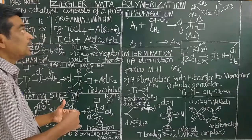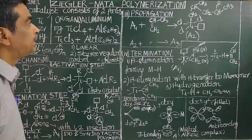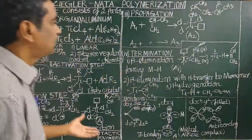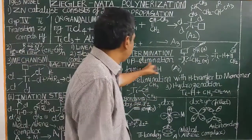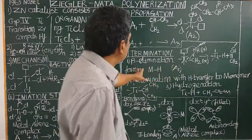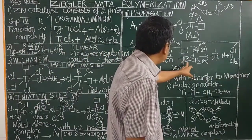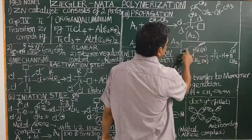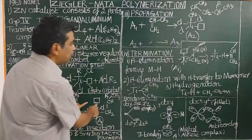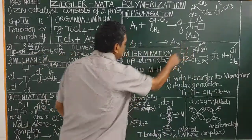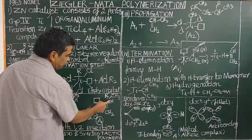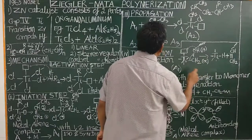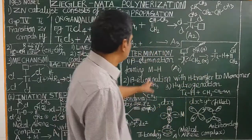Now let us see how polymerization is terminated. There are three ways of termination. One is beta elimination of hydrogen — a hydrogen from the beta carbon is transferred to titanium, forming a titanium-H bond and a terminal C=C double bond, terminating the chain.